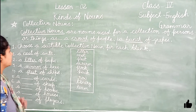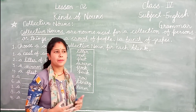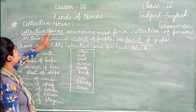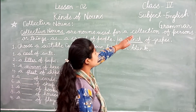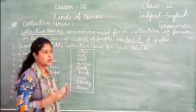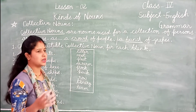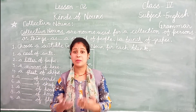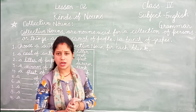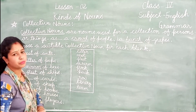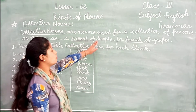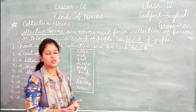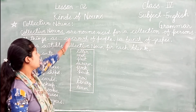Now, collective nouns. Collective nouns are nouns used for a collection of persons or things. By a collection of different things or a collection of people — we call it a collective noun. For example: a crowd of people, a bunch of grapes.